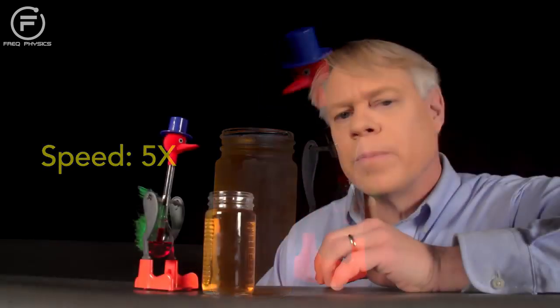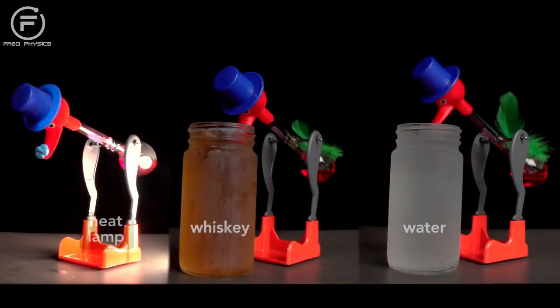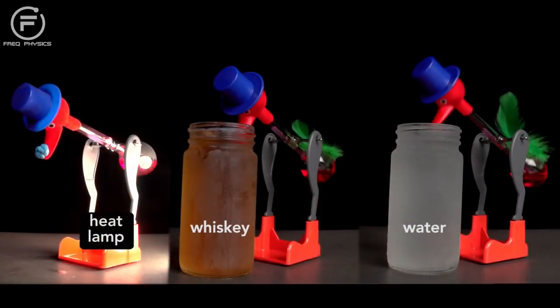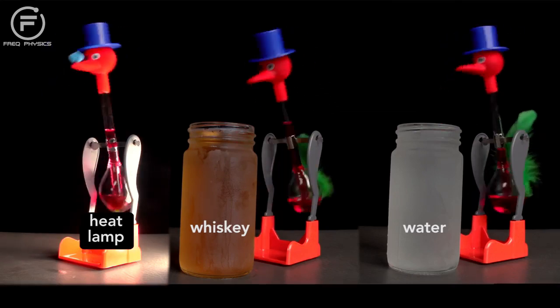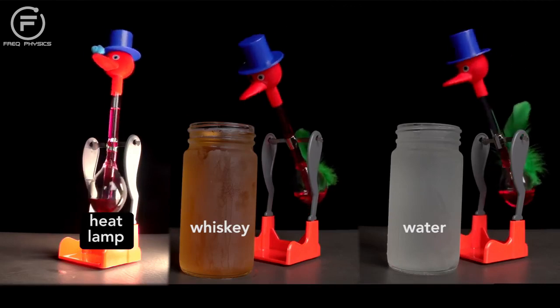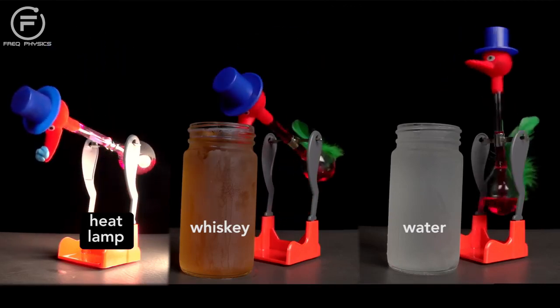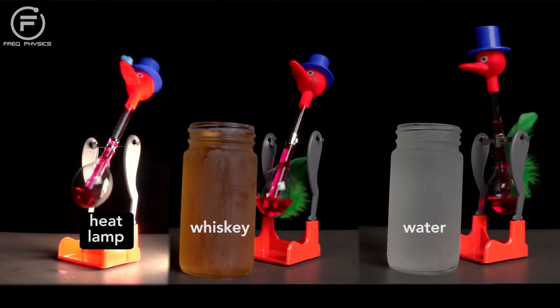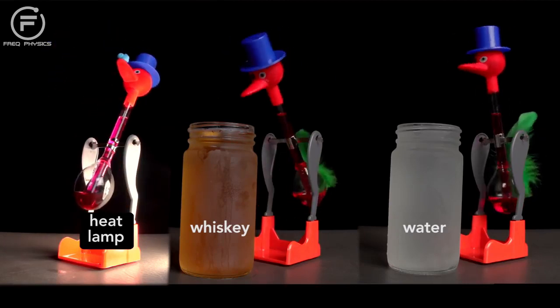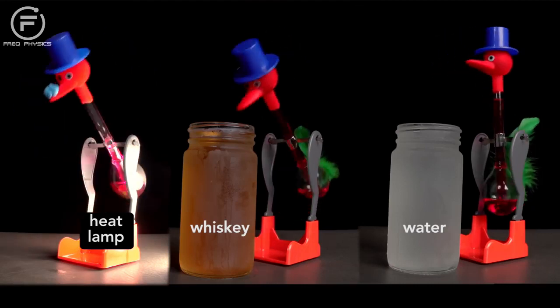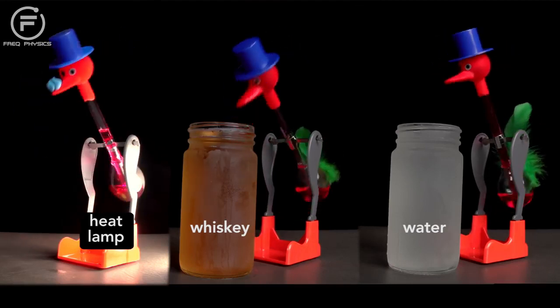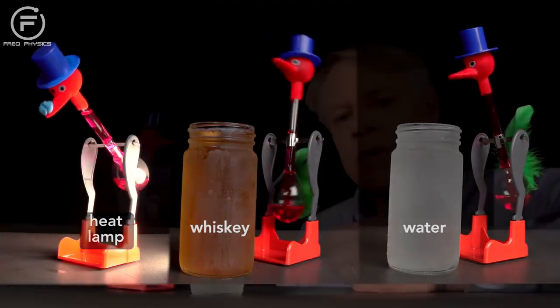We can also now understand why the bird's rate of drinking differs among the three methods I used to activate the bird: a heat lamp, whiskey, and water. Roughly, the heat bird takes three drinks for every one of the water bird. The whiskey bird takes two for every drink of the water bird. The reason the bird drinks whiskey faster than water is because the rate of evaporation of the alcohol is greater than that of water. This means that heat is withdrawn faster from the head, and so more vapor condenses in a shorter amount of time, which accelerates the pressure difference. The heat lamp causes the greatest difference of all, which highlights how an engineer thinks about this bird.